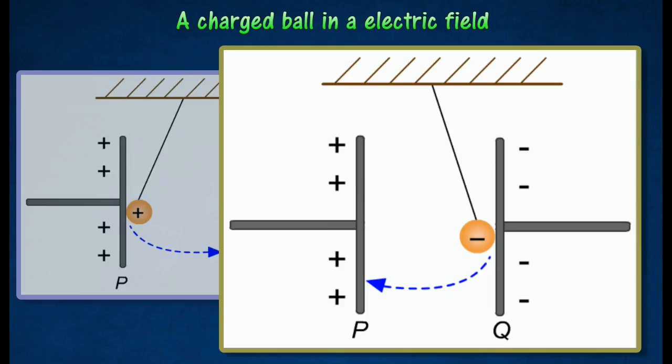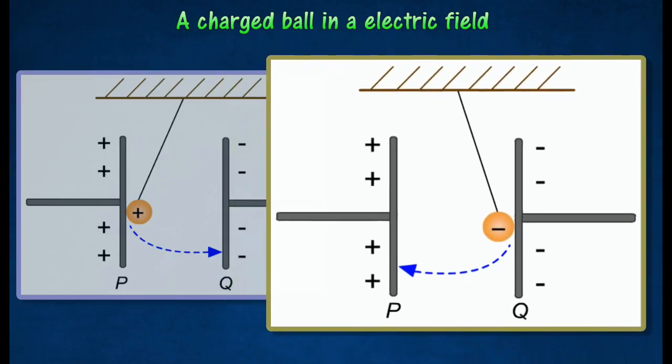Since like charges repel, the ball will be pushed back towards plate P, thereby causing the ball to swing to and fro continuously between the two plates.